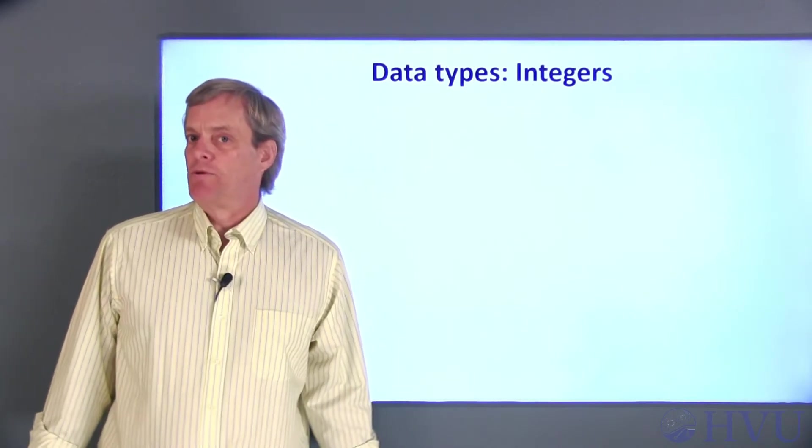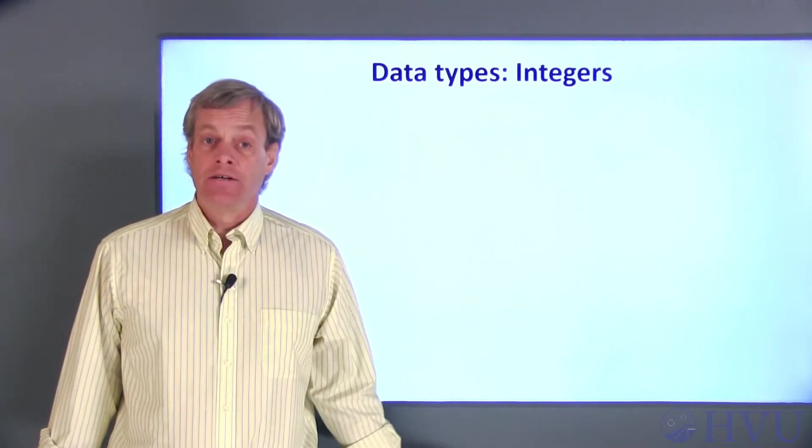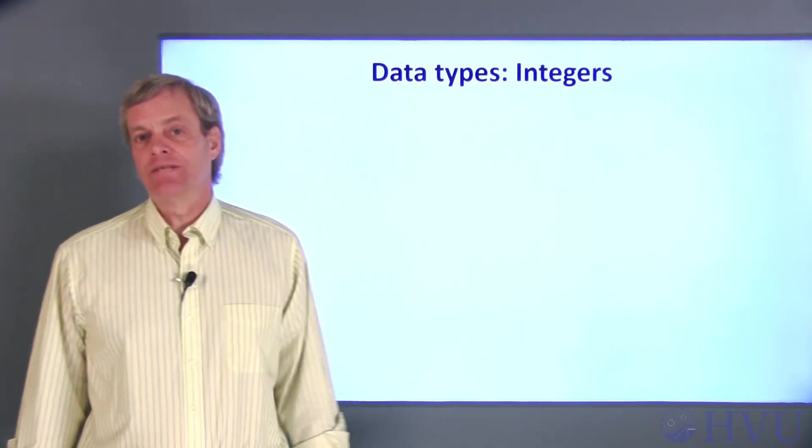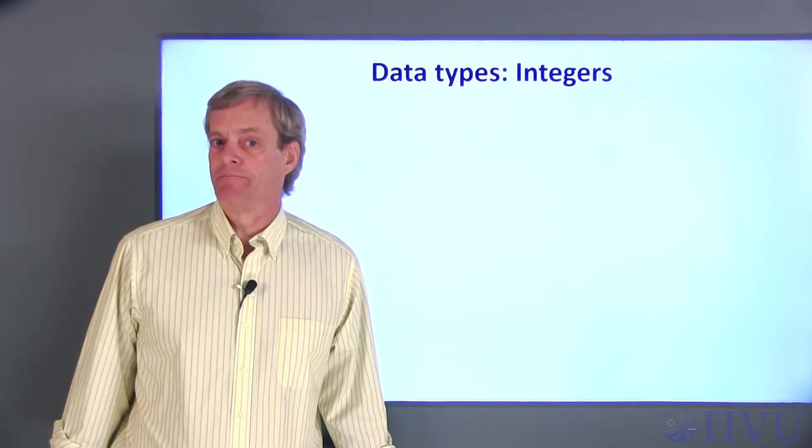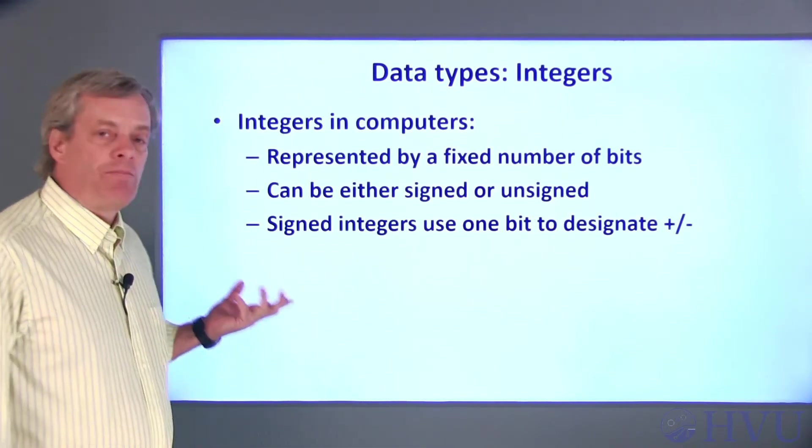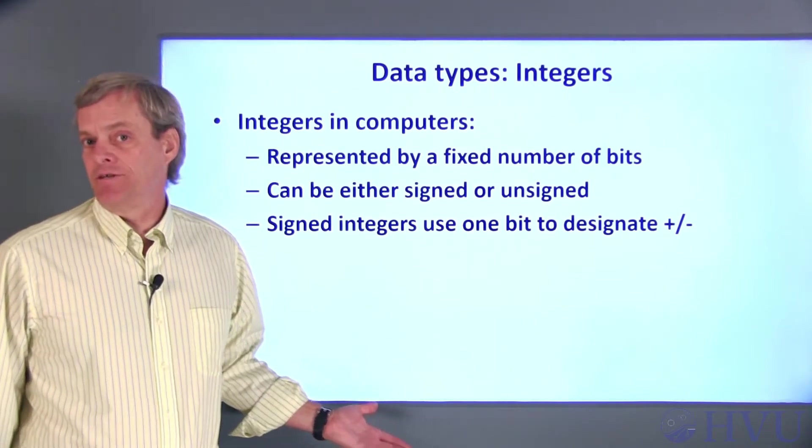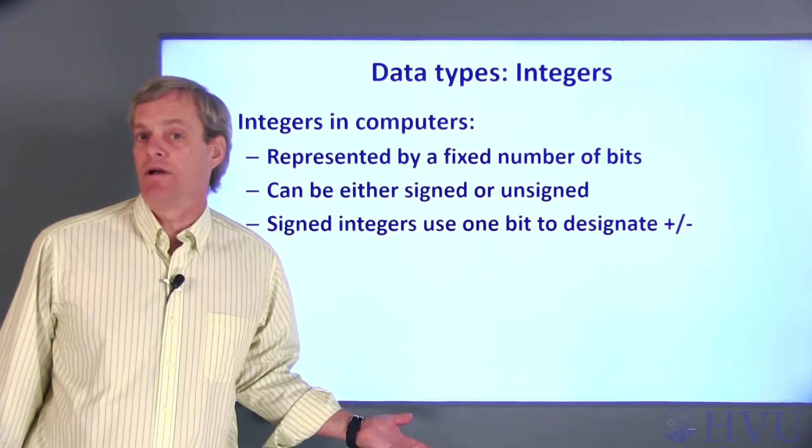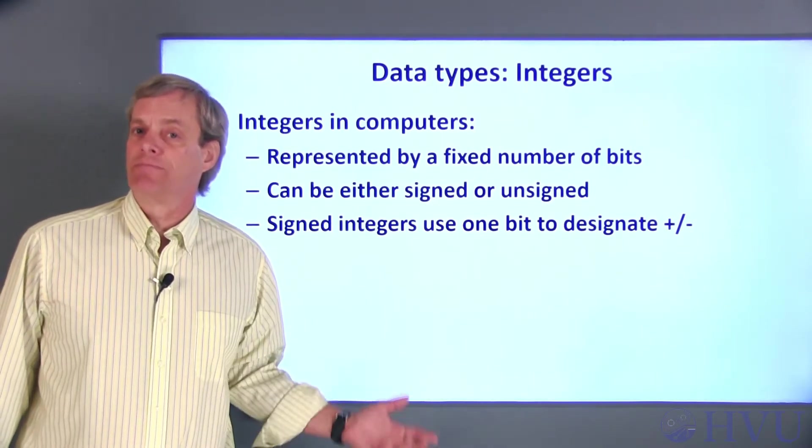Computers mostly represent numbers in two different types, integers and floating point numbers. Integers have no fractional part, which makes them easier to use when illustrating how numbers are represented in computers. Integers are represented in computers by a specified number of bits, so I can specify an 8-bit integer, a 16-bit integer, and so on. The more bits in the number, the larger the range of numbers that can be specified.